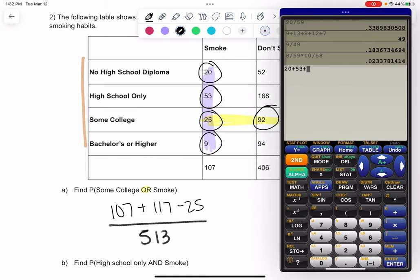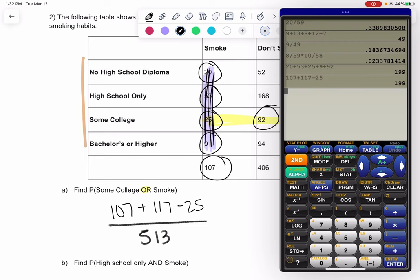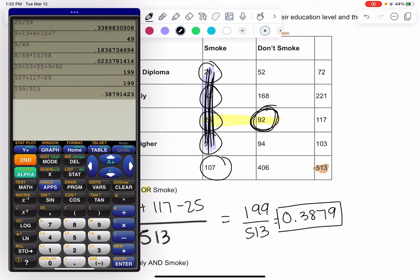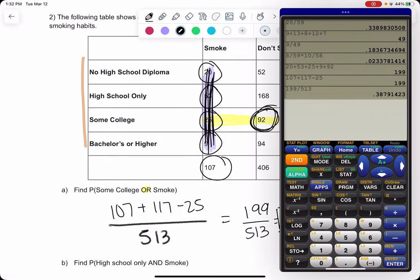So if we do 20 plus 53 plus 25 plus 9 plus 92, we get 199. And then hopefully that's the same thing we get if we add both totals and then take away the overlap. So whatever makes more sense for you, but either way we get 199 out of 513, which gives me a probability of 0.3879. So ORs are either category - it could be in both or it could be in just one.